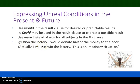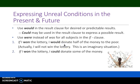However, this is talking about the future — it's a condition in the future. And we have 'would' and the base form of the verb in the result clause, which is for a desired or predictable result. If I won the lottery, I could donate some of the money. We use 'could' to express a possible result, so it would be possible for me to donate some of the money — that would be a possibility.